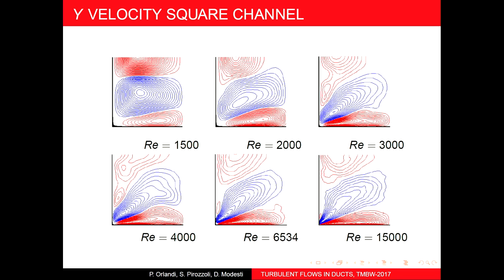The most noticeable change is that the peak moves closer to the corner. Comparing the circular pipe and square channel, the square shows only one quarter of the domain due to symmetry, including averaging over the four corners. At Reynolds 1500 and 2000 there is no turbulent energy; at 3500 turbulent energy appears and is distributed.